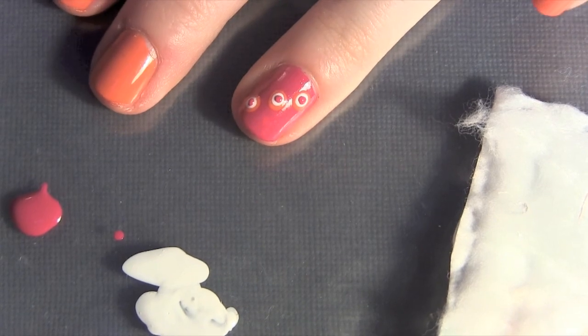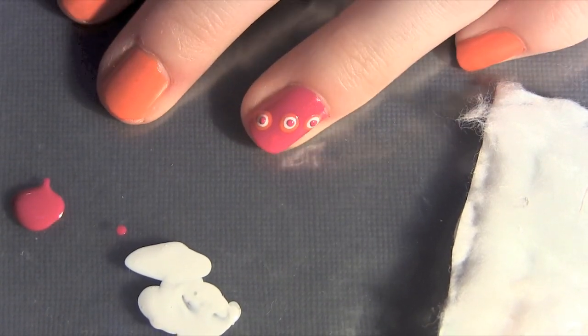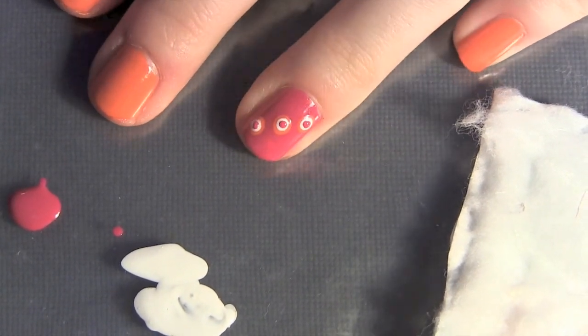Once you're done with all of your nails, just wait about 5 minutes and apply a top coat and then you are done. I hope you all enjoyed this tutorial. Make sure to subscribe to both my channels and my Twitter - I will link all of those down below so you don't miss out on any videos. I will see you all in my next video. Bye!